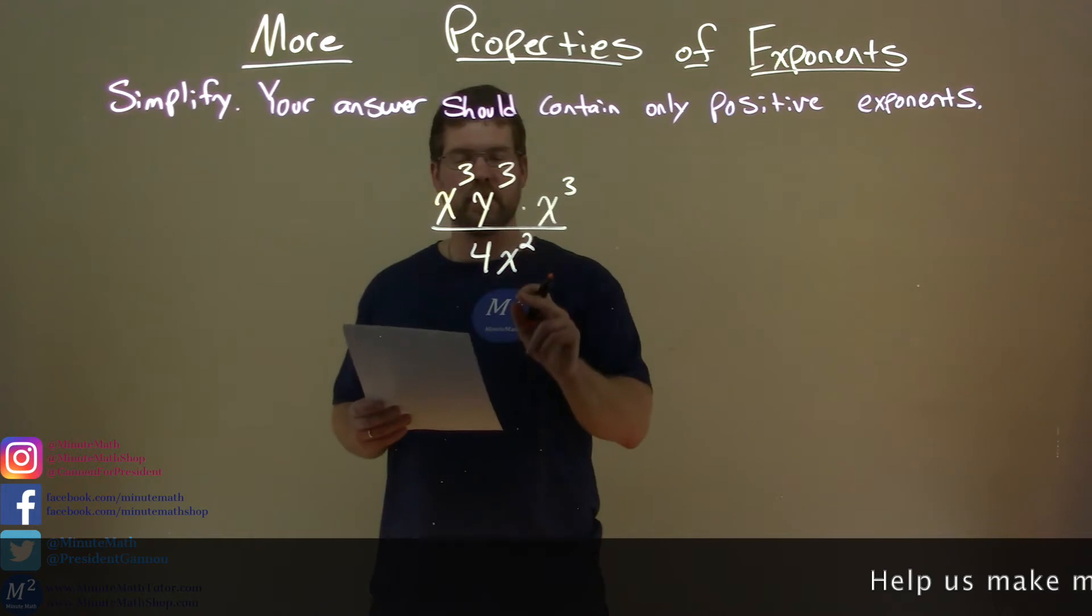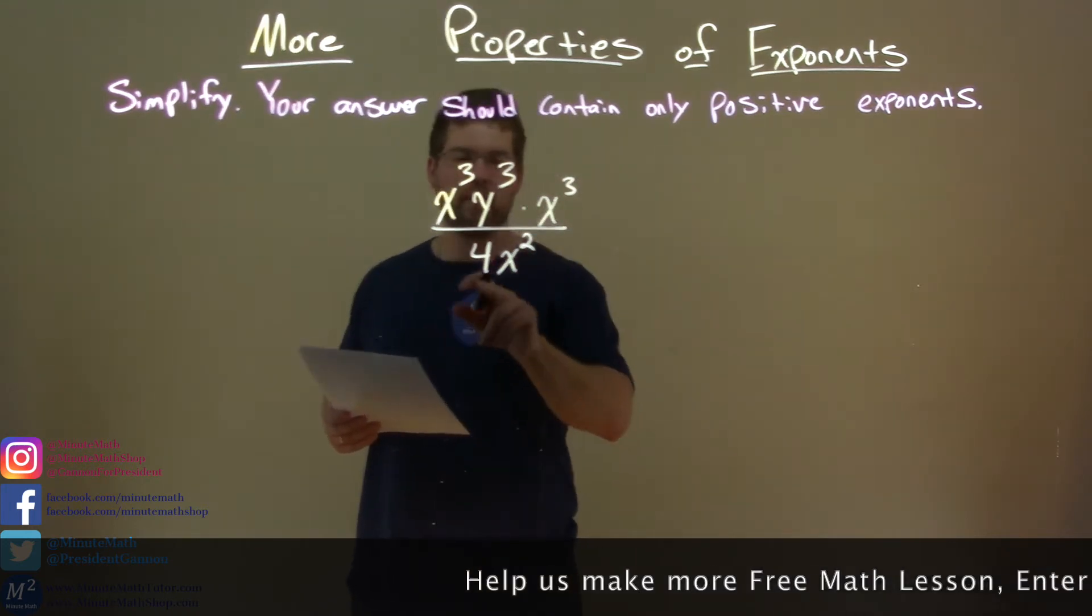x to the third times y to the third times x to the third, all over 4x squared.